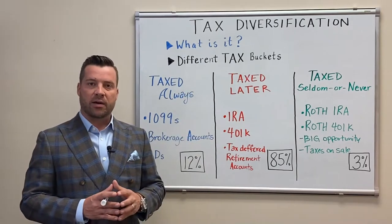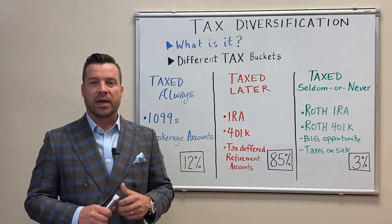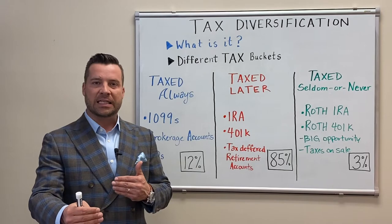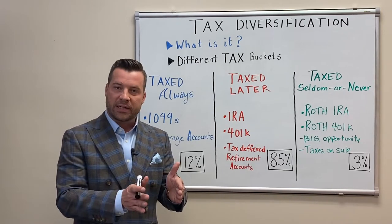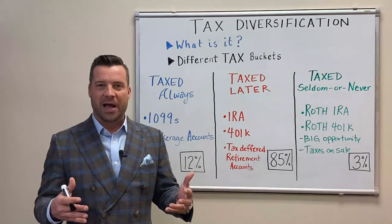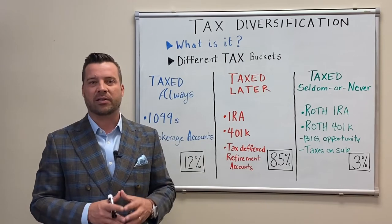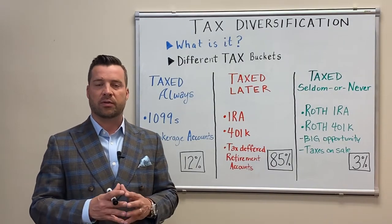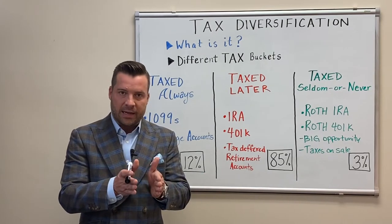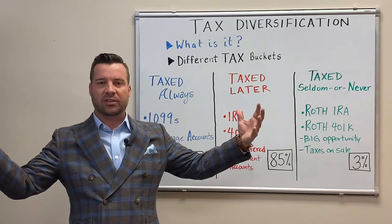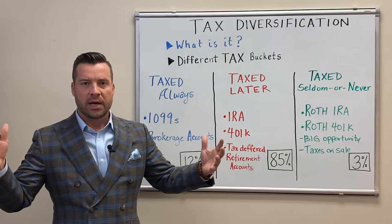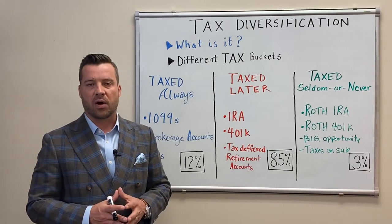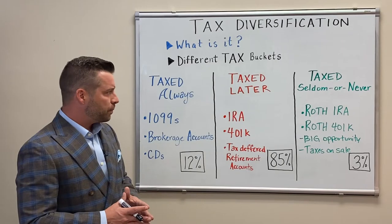The second bucket, where a lot of people fall, is 'taxed later.' This includes regular or traditional 401ks, individual retirement accounts, pre-taxed money — any money you invest into these accounts is pre-taxed. You get a tax break today, so a lot of people get excited about these pre-taxed accounts. But what a lot of people don't realize is when you defer taxes for 10, 20, 30, sometimes 40 years, you save a little today and then owe tax on a much larger investment amount later.